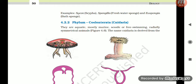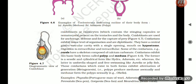Section 4.2.2: Phylum Coelenterata (or Cnidaria). They are aquatic, mostly marine, sessile or free-swimming, radially symmetrical animals. The name Cnidaria is derived from cnidoblasts or cnidocytes, which contain the stinging capsules or nematocysts present in the tentacles and body. Cnidoblasts are used for anchorage, defense, and capture of prey. Cnidarians exhibit tissue level of organization and are diploblastic. They have a central gastrovascular cavity with a single opening, the mouth, on hypostome. Digestion is extracellular and intracellular. Some cnidarians, like corals, have a skeleton composed of calcium carbonate.